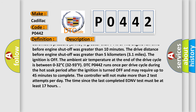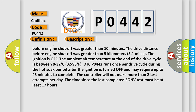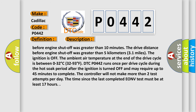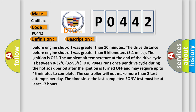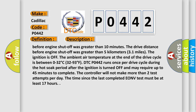The ignition is off. The ambient air temperature at the end of the drive cycle is between 0 to 32 degrees Celsius (32 to 93 degrees Fahrenheit). DTC P0442 runs once per drive cycle during the hot soak period after the ignition is turned off and may require up to 45 minutes to complete. The controller will not make more than two test attempts per day. The time since the last completed EONV test must be at least 17 hours.